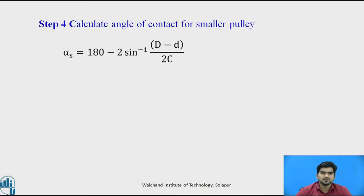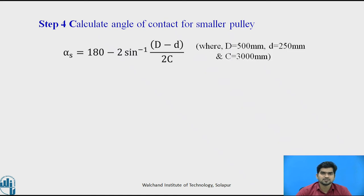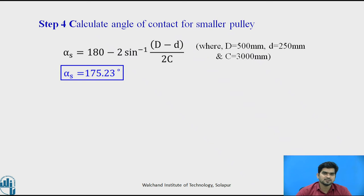In step number 4, calculate the angle of contact for the smaller pulley. The wrap angle is calculated using the standard equation. Put in the values of capital D, small d, and the center distance to get the wrap angle for the smaller pulley.